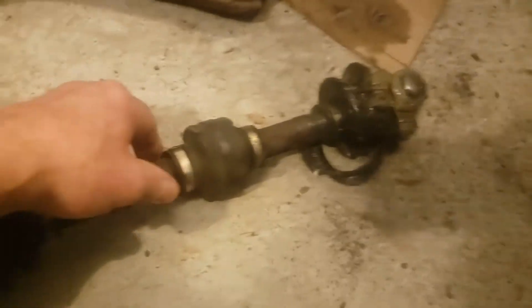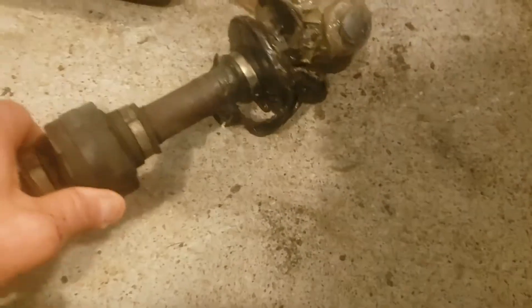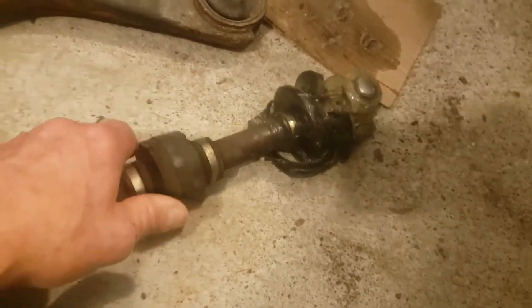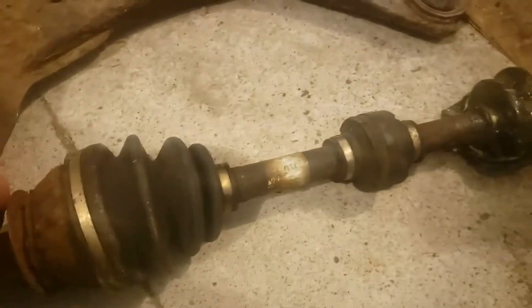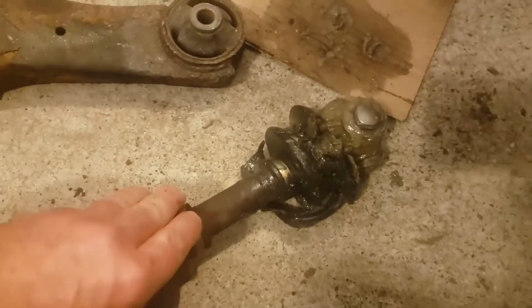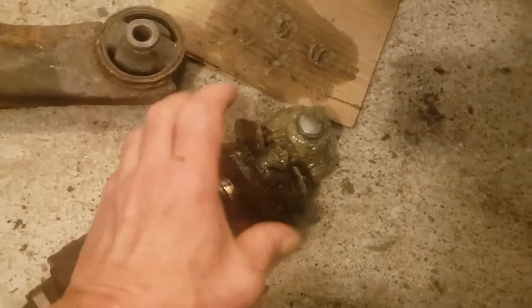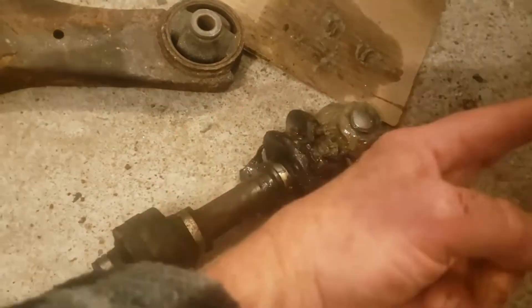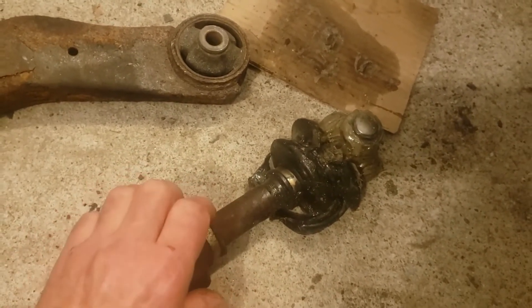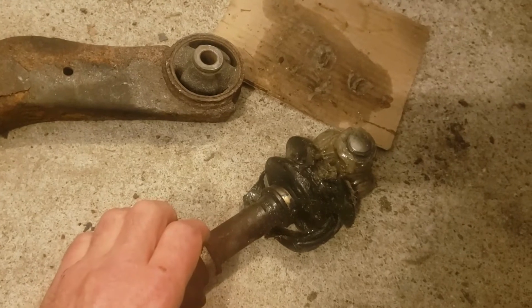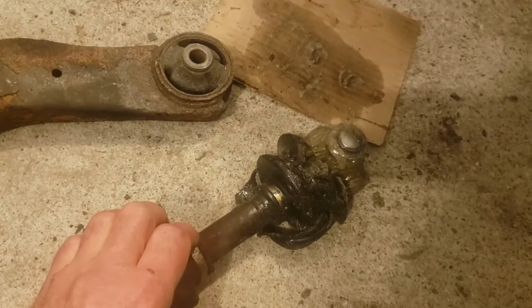The whole wheel swung out and the steering knuckle attached to the wheel pulled the entire CV joint out of the transmission. So that's the problem, but the real problem is that this piece, the spline shaft, is still inserted in the transmission and I can't get the thing out.